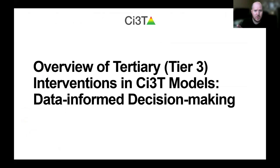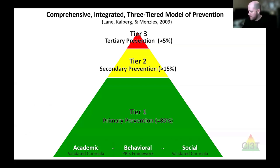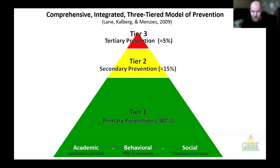My name is Grant, and we're going to take a moment to look at some building blocks — situating tertiary tier three interventions within CI3T models of prevention and thinking about things from a data-informed decision-making framework. CI3T is a nice visualization of the work we do: it is a tiered system, a broadening of MTSS to include social-emotional well-being through social skills curriculum. Within CI3T, we look at academics and behavioral supports through a positive behavior interventions and supports framework.